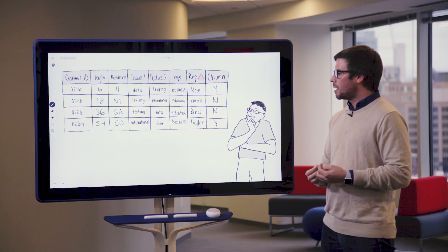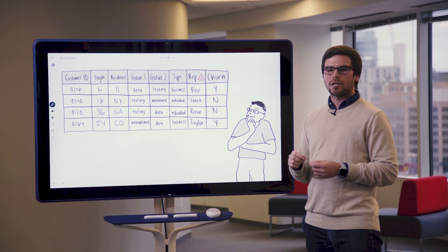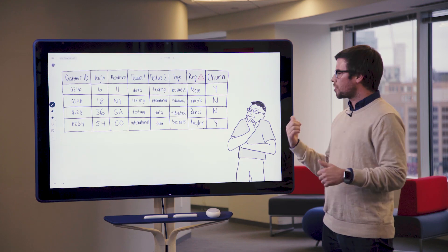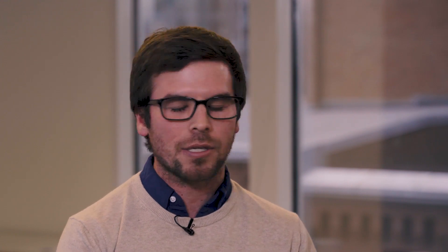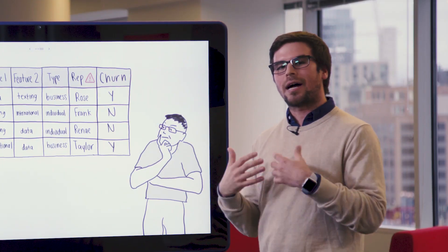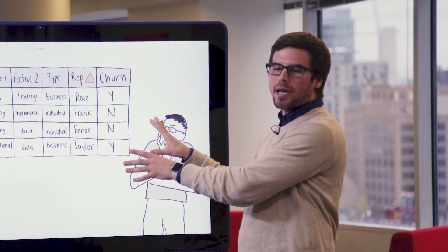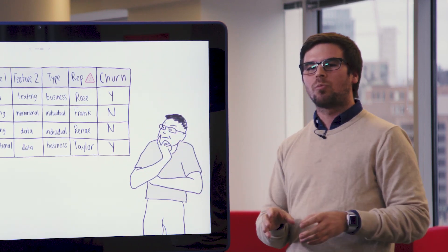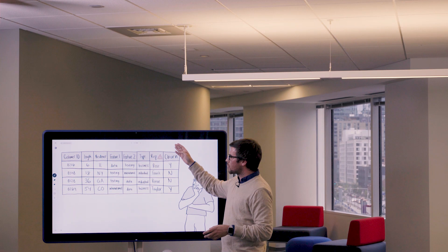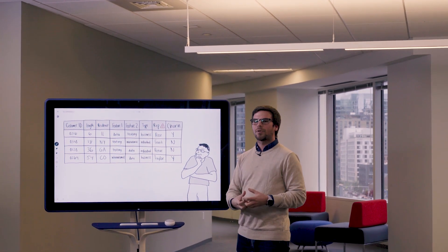The problem with this though, is that we would never know if a customer is going to speak to Rose or Taylor before we know their intent to churn because we would not route them to the retention department otherwise. So what we want to do is either eliminate this column entirely or we would want to use this data set for a different type of problem where we do know the last service rep they spoke to at that time of prediction.